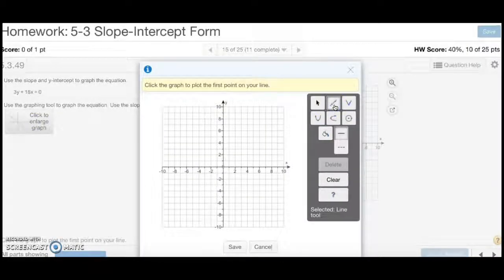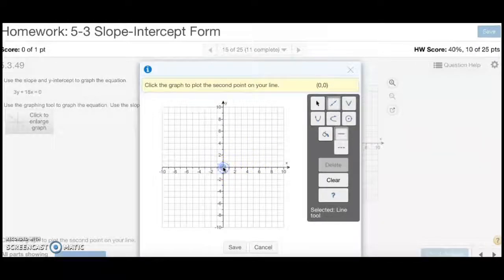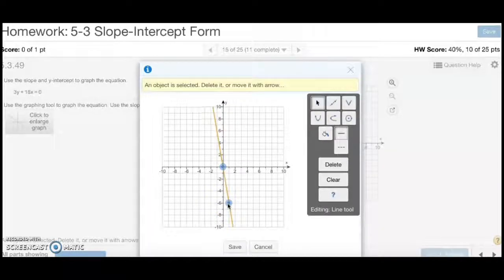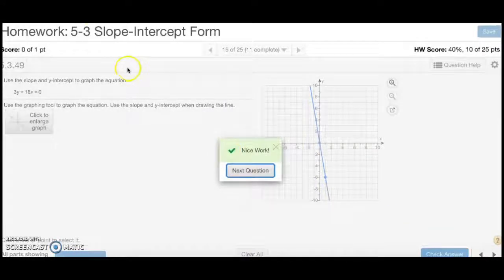So, y equals negative 6x. Since there's nothing being added, it means my y-intercept is 0, 0. Negative 6 means I go down 6. So, 1, 2, 3, 4, 5, and 6. And I go to the right 1. It's a decreasing line since the slope is negative. Press save. Check answer. That's number 15.